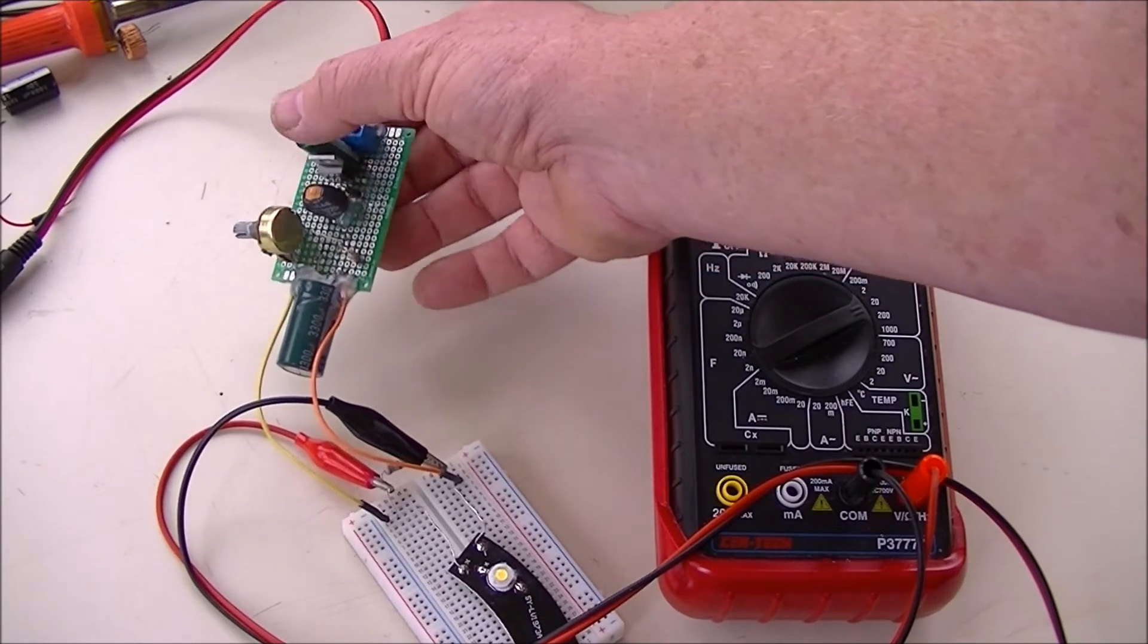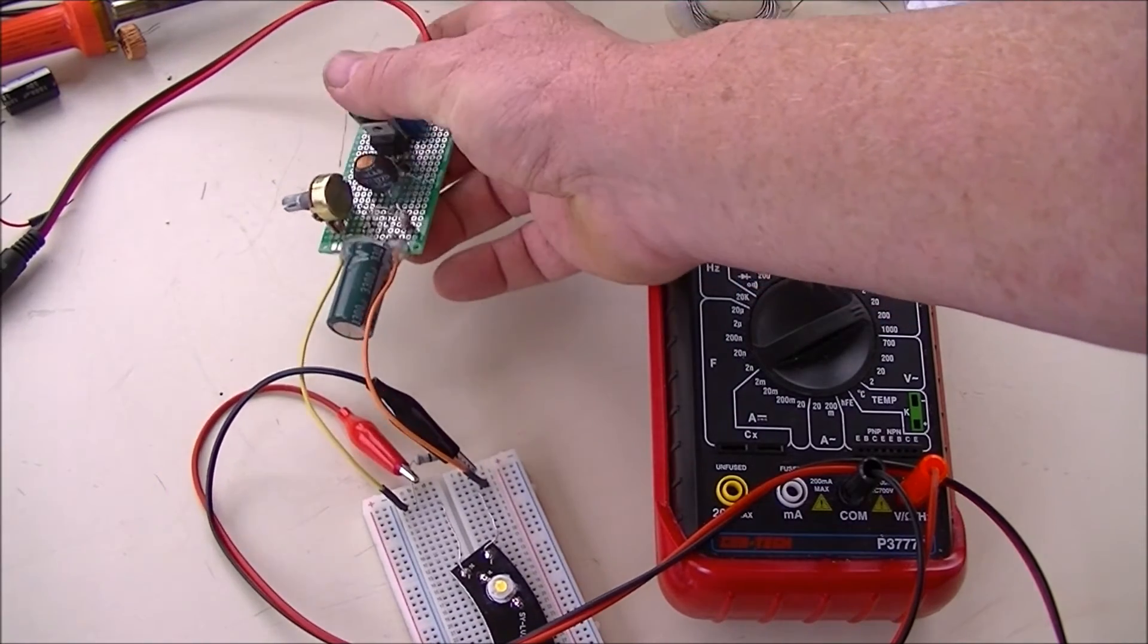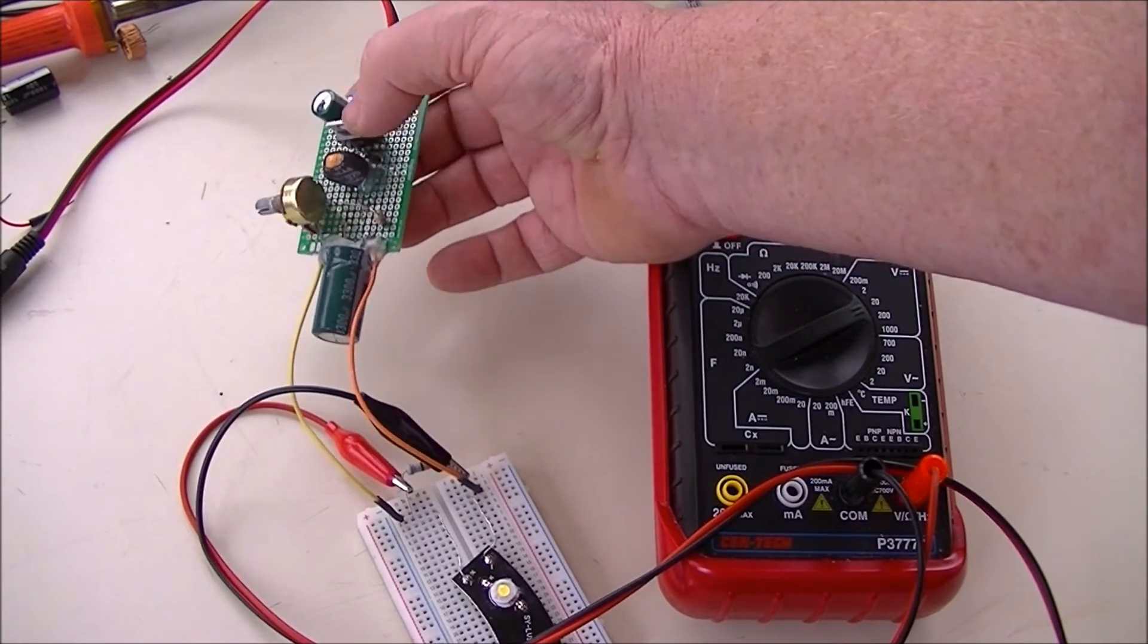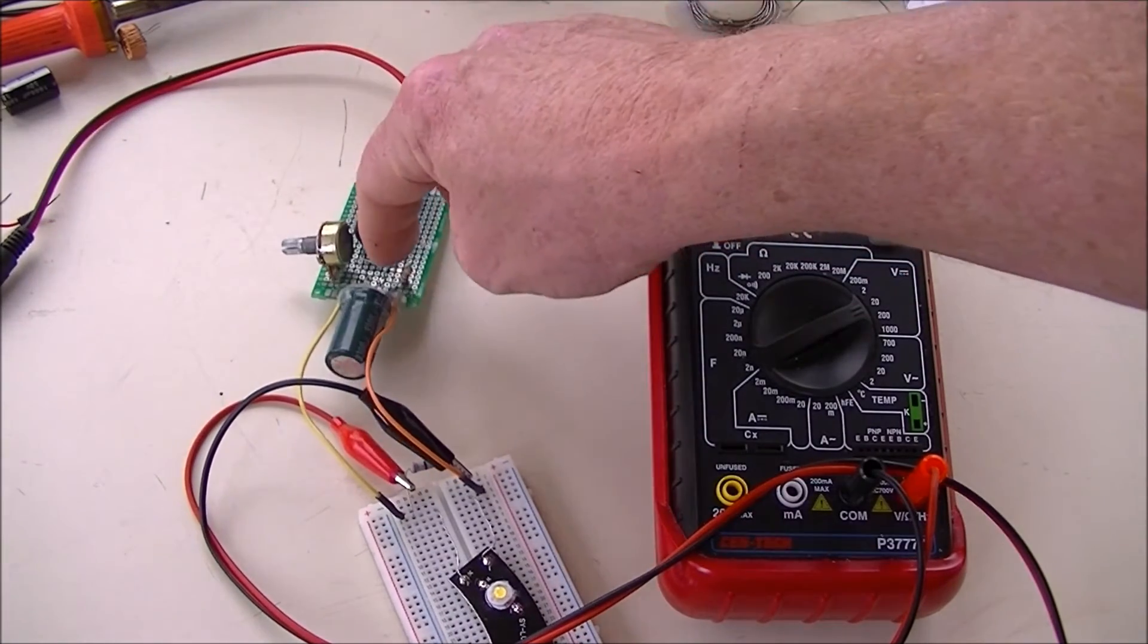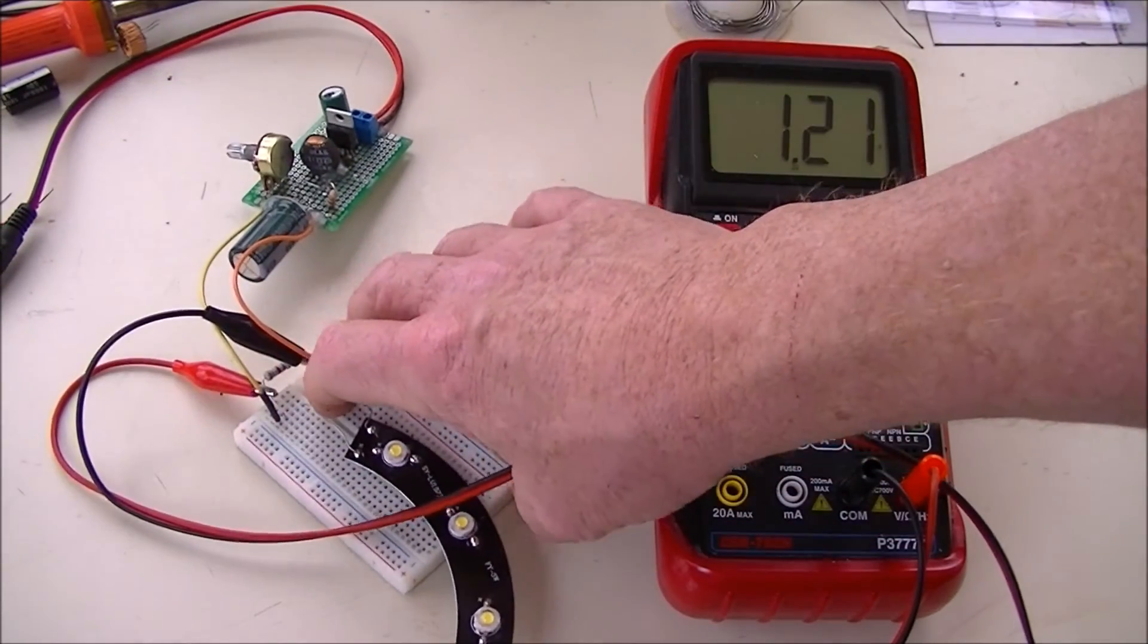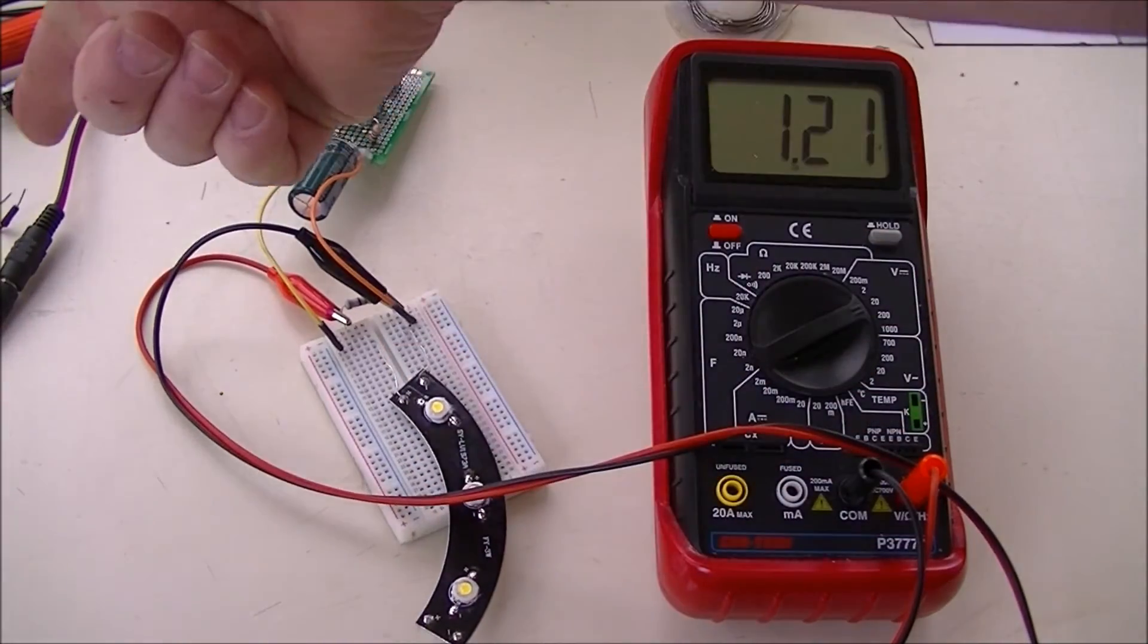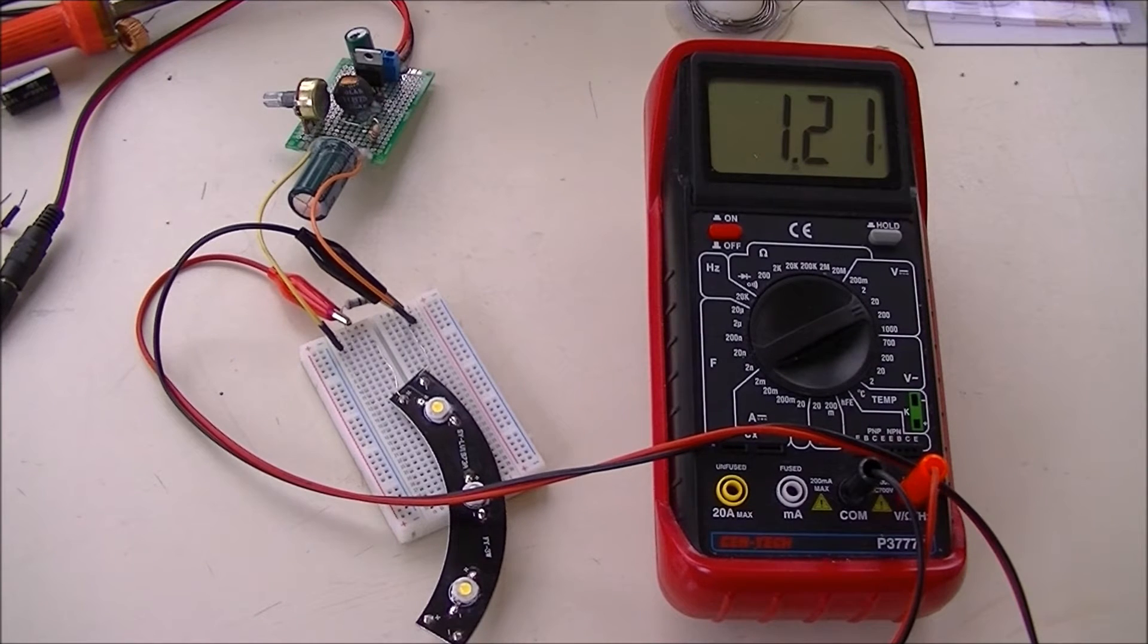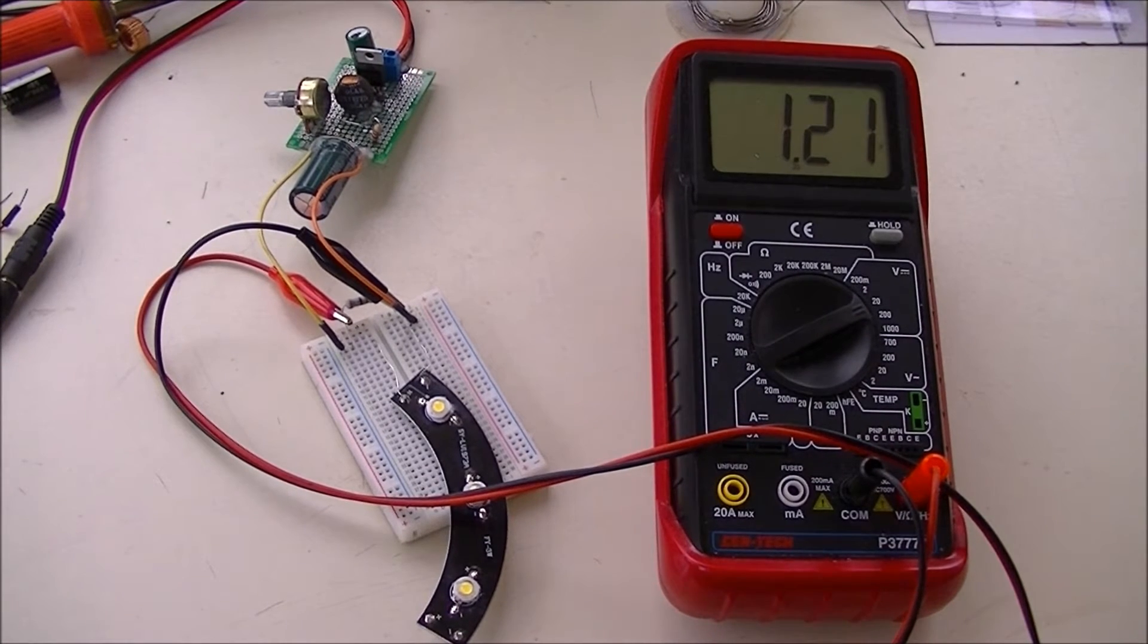It has two capacitors, a coil, switching diode, an extra resistor, and a potentiometer. This has 17 volts going in.